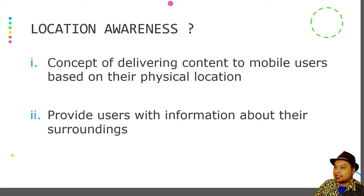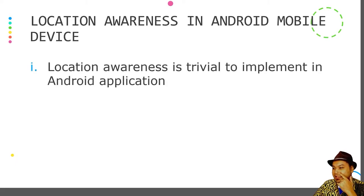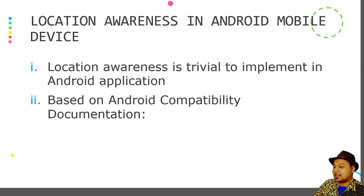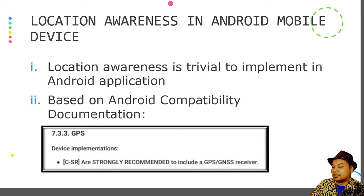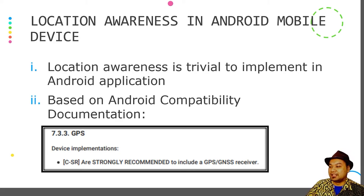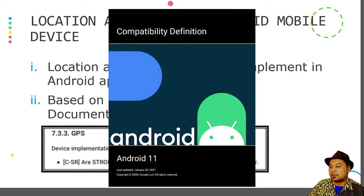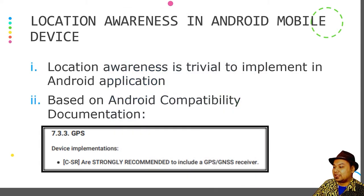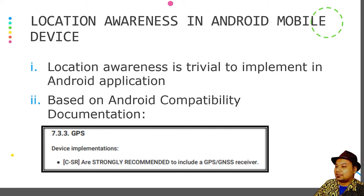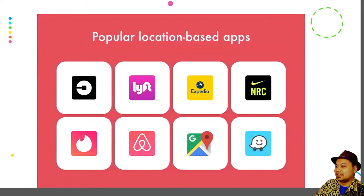Let's look into location awareness implementation in Android devices. Location awareness is trivial to implement in Android applications because the Android compatibility definition has already stated that handheld devices are strongly recommended to include a GPS or GNSS receiver. The Android compatibility documentation is the prime documentation for mobile devices to follow if they want to get Android certification. So if it states that handheld devices should include GPS, it can be assured that all mobile phones would include GPS, dictating location awareness to be included in Android mobile applications.